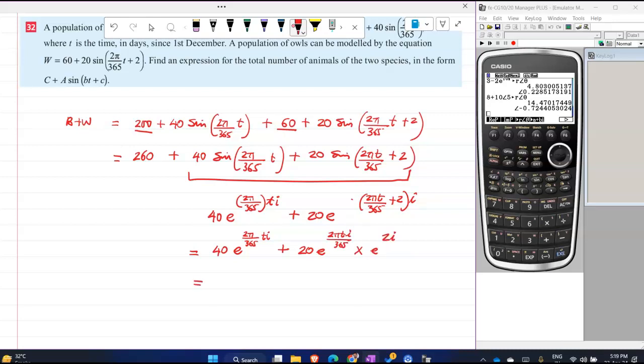You remove common. Only if it's removing common, you know, they should have the same period. Then only this method holds good. But they will give you only the same period, so you don't have to worry about it. So this is 40 plus 20 e^(2i) times e^(2πT/365).